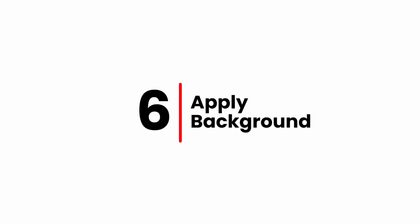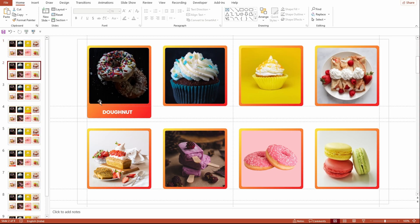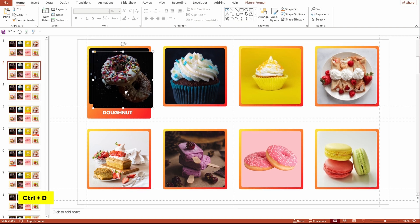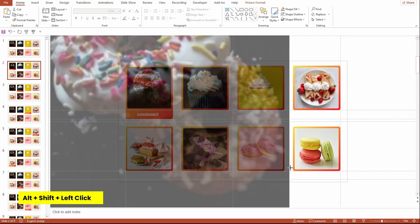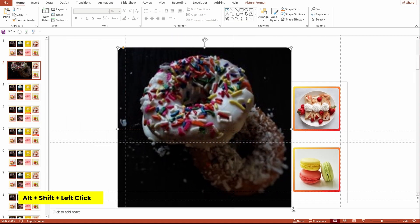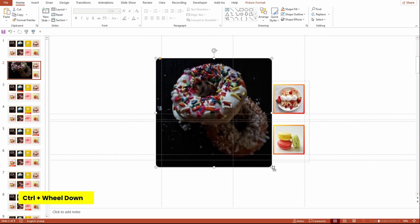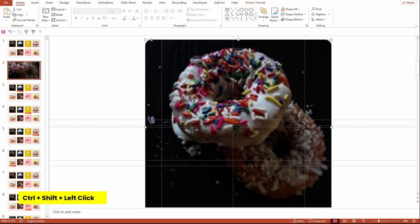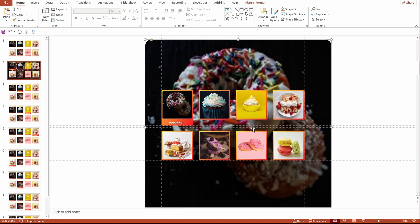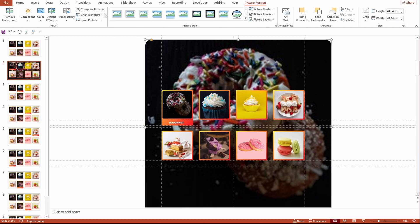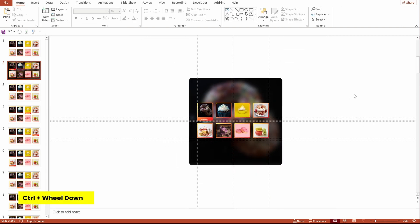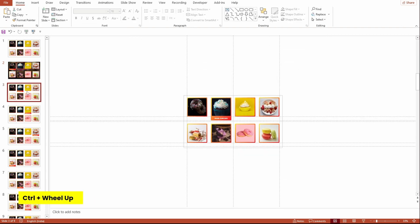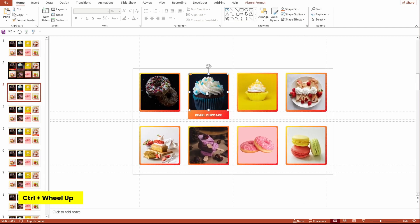Let's apply a background for all the slides except the main slide. Go to the second slide, select the first image, and press Ctrl+D to duplicate it. Resize it to fit the whole slide. Right-click on the image and select Send to Back. Then go to the Picture Format tab, click on Artistic Effects, and apply the Blur effect. Move on to the third slide and repeat the same process until the ninth slide.